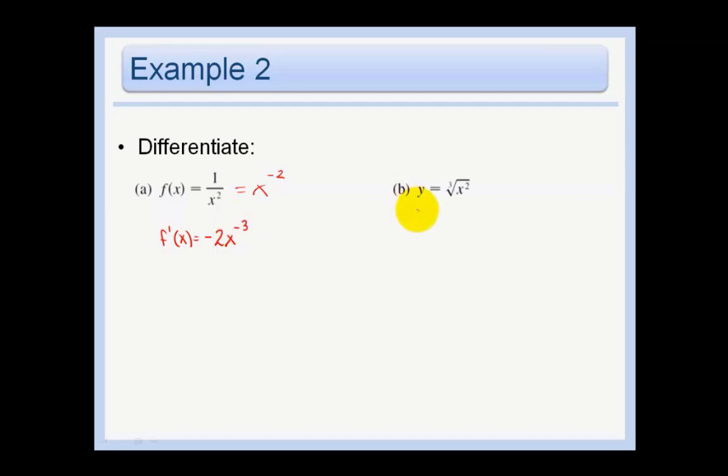In part B, again, we want to express this as a power. So let's say this is x to the 2/3rds. And so the derivative is just going to be 2/3rds x to the negative 1/3rd.